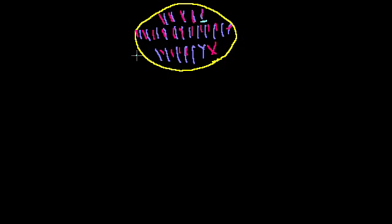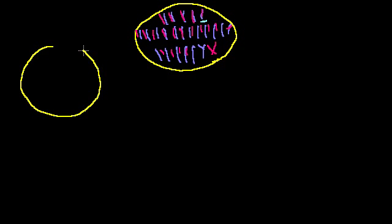That first cell that had the potential to become me was the product of fertilization — an egg from my mother. So the egg from my mother, focusing just on the DNA, had 23 chromosomes.